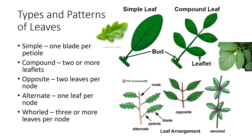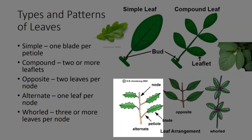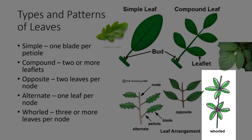Differences in how leaves are attached to stems are commonly used as a means of plant identification. Leaves are attached to stems in three major patterns. The opposite pattern occurs when two leaves are directly across from each other, or two leaves per node. The alternate pattern occurs when leaves are staggered along the length of the stem, or one leaf per node. The whorled pattern occurs when three or more leaves are attached per node.